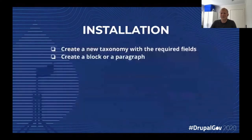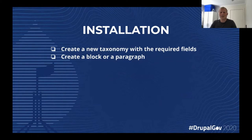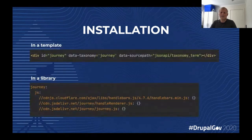The installation is fairly simple. You create the taxonomy with the required fields — there are a few required fields and a bunch of optional ones. The timeline is commonly 'it needs to be done yesterday,' and that's one of the focus points here. Then you create a block or a paragraph. You need to do a little bit of code, but this is the minimal implementation: add one div to the template and require three JavaScript files. That's all you need to get started.